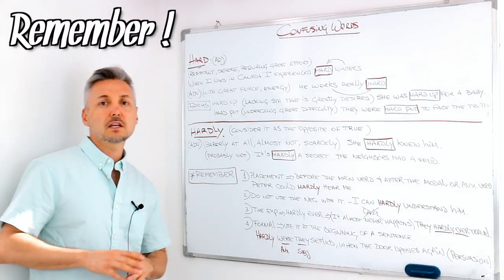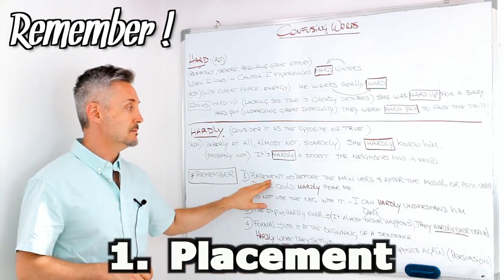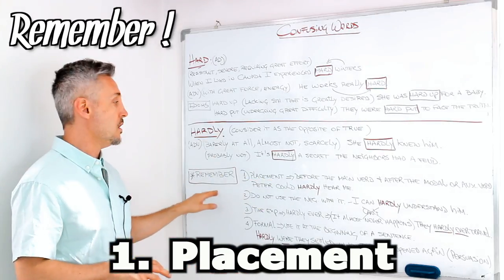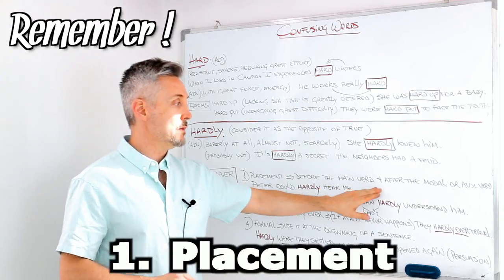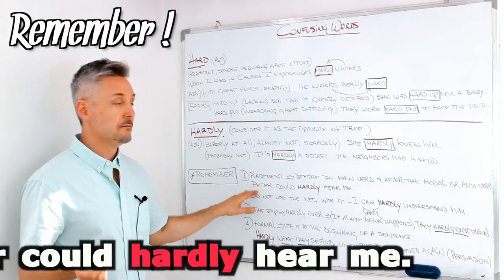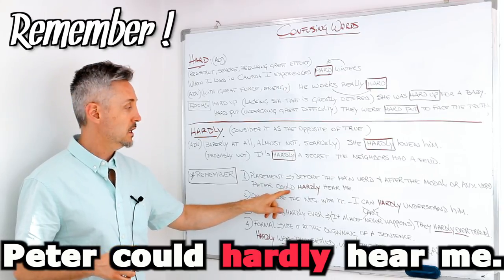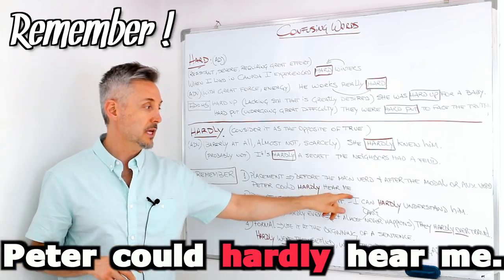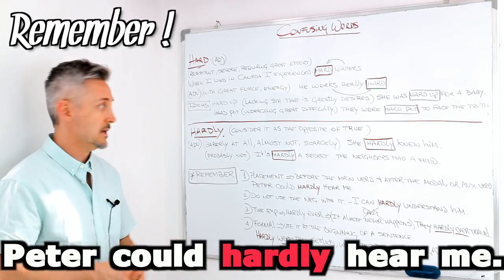Four things that you need to remember about these two words. First, placement. The placement of hardly in this case: before the main verb and after the modal or auxiliary verb. For example, Peter could, modal verb could, hardly hear me. So he didn't hear me at all.